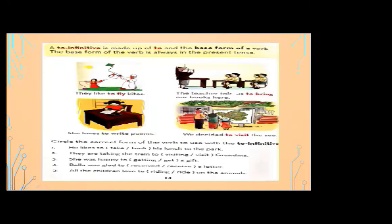In the first sentence, 'they' is the subject, 'like' is the first form of the verb, and 'to fly' is the infinitive, followed by the object. In the second sentence, 'the teacher' is the subject — the doer of the action — and 'told' is the verb. 'To bring' is the to-infinitive form of the verb.